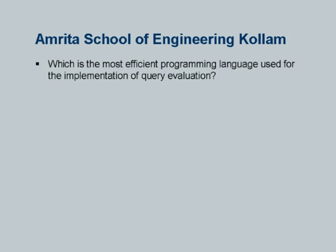The next question: which is the most efficient programming language for the implementation of query evaluation? All widely-used database systems are based on C or C++. The only exceptions are things like Apache Derby which are not intended for high-performance data processing and are written in Java. Java is a very nice language, but efficiency for building a database system is not one of its strong points. The same problem applies to C# as well. So C or C++ is what everybody uses.